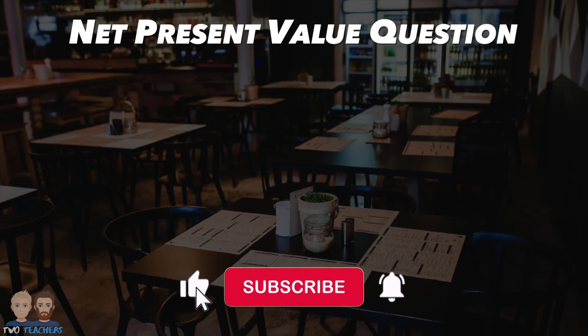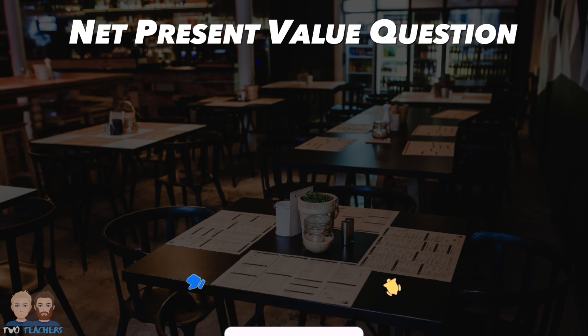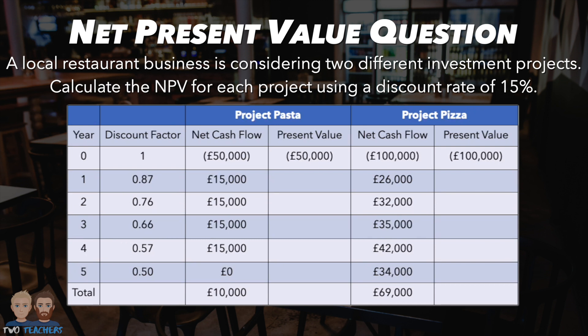Now it's your turn to calculate the net present value of two potential investments to assess which would be the better option for a local restaurant business. The restaurant is considering two projects: Project Pasta and Project Pizza. Your task is to calculate the net present value for each using a discount rate of 15%; the discount factors have already been provided in the table. Pause your screen now to attempt the question, then follow along as the calculations are walked through.